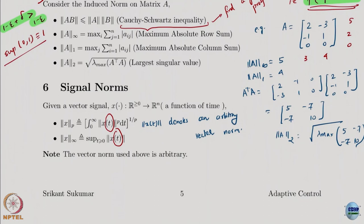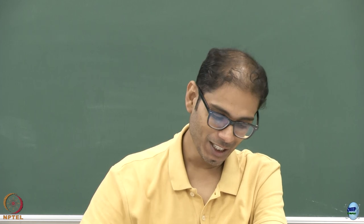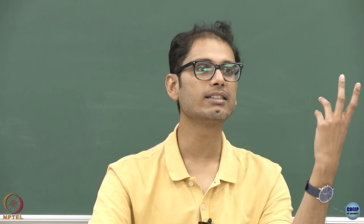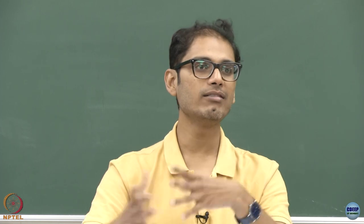Now that we have done vector norms and matrix norms, we have to go to signal norms — the final norm. We are progressing quite linearly: we have states, we have systems. Our aim is to talk about size of states and distance of states. States are vectors so we looked at vector norms. For linear systems or Lyapunov functions there are matrices, so we need matrix norms. Finally, when we solve states and create trajectories, they are functions of time — they are signals — so we need signal norms.